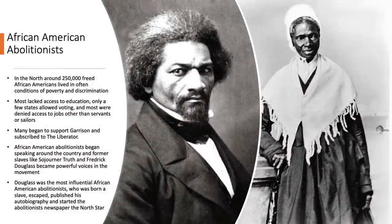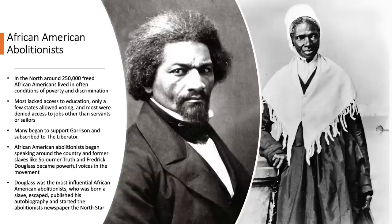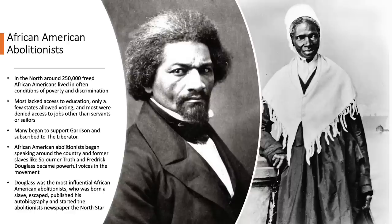African Americans played important leadership roles in the abolition movement as well. Around a quarter million African Americans lived in the North, yet despite being free of slavery they often lived in poverty and faced discrimination. Most did not have access to education, and by 1855 only Maine, Massachusetts, New Hampshire, Rhode Island, and Vermont allowed African Americans to vote. Most were denied access to jobs other than servants or sailors. Supporters of abolition began speaking around the country, and former slaves like Sojourner Truth and Frederick Douglass became powerful voices. Douglass, born a slave who escaped and published his autobiography Life and Times of Frederick Douglass, convinced people of the evils of slavery and spread the abolitionist message through his newspaper, The North Star.